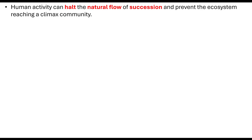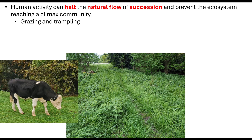It's important to note that humans actually do things that halt this natural flow of succession, preventing ecosystems from reaching climax communities. We can do that through the introduction of animals. For example, in Cambridge, between the end of April and the beginning of May, cows are put back out into green areas to maintain grassy areas at a set level. This halts the natural flow of succession — the cows graze, and they also trample the plant species, pushing them back down. Those plants decompose, putting more nutrients back into the soil.